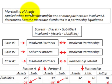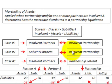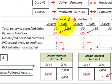In summary, the marshalling of assets doctrine is applied when a partnership and/or one or more partners are insolvent, and it determines how assets are distributed in a partnership liquidation. We looked at Case 1, where we had insolvent partners and a solvent partnership. Case 2 would be where partners are solvent but the partnership is insolvent, and Case 3 would be where both partners and the partnership are insolvent.